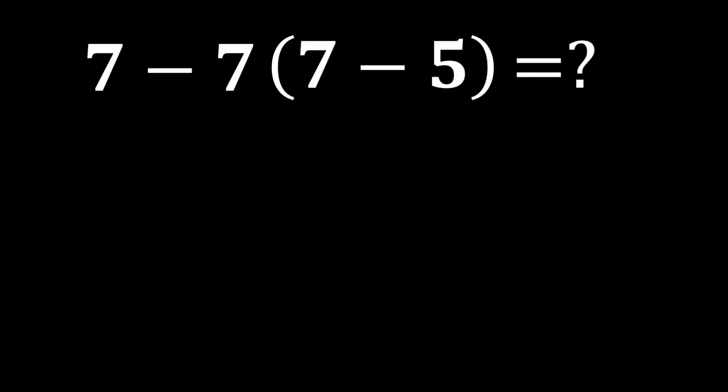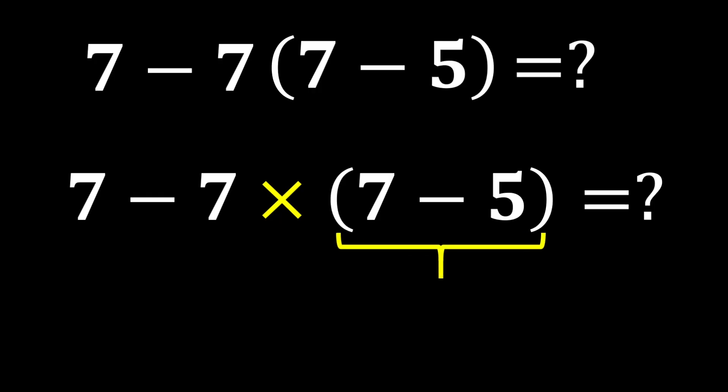7 minus 7 times 7 minus 5. In mathematics, when a number is placed next to a parenthesis, it means that the number is multiplied by what is inside the parenthesis, but for simplicity and brevity it is usually not written. According to PEMDAS, we first solve what is inside the parentheses. 7 minus 5 gives us 2.